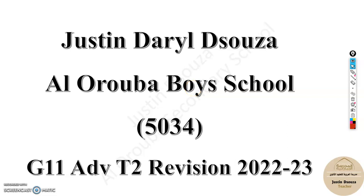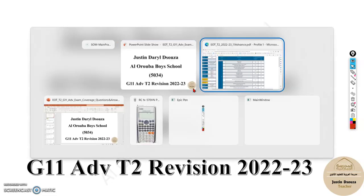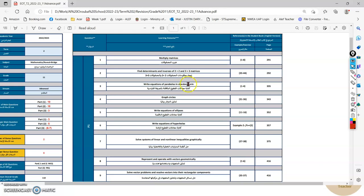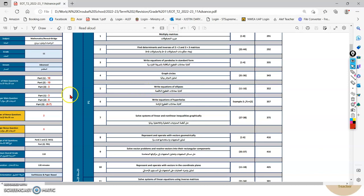Hello everyone, I hope you all are doing great. We will begin with the end of term revision videos for the Term 2 exam. Before we begin, let's go through the exam scheme. You have three parts this time. The first part will have 10 questions, each carrying only three marks. These are supposed to be easier type of questions — not in depth — and all of this will be in the computer itself in the Swift SS.